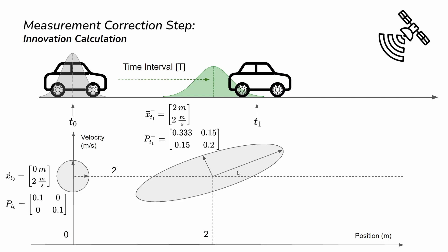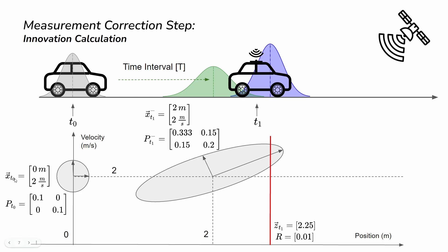To visualize the covariances again: when we receive the measurement, we draw it as a vertical straight line because it only contains position — there is no velocity in this measurement. That is why it is drawn vertically like this.